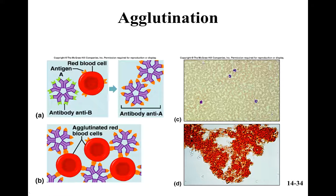If you get the wrong blood type — for example, A blood going into someone who has anti-A antibodies (someone with B blood) — those antibodies will cause all the blood cells to stick together. We call that agglutination. Normal blood looks normal, but agglutinated blood all sticks together, and that's dangerous.